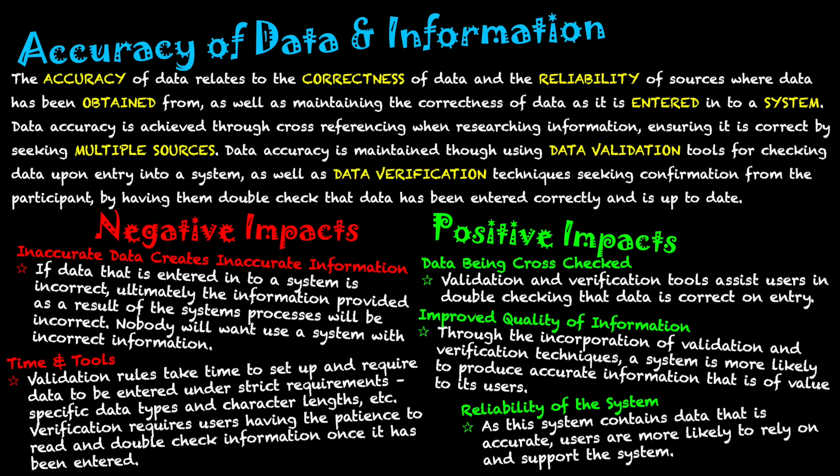Finally, there is the reliability of the system. As the system contains accurate data, users are more likely to rely on and support it, leading to a more successful information system. Accuracy is one of the foundation issues because data has to be correct in an information system — incorrect information leads to a poor system that no one will want to use. Accuracy is a great social and ethical issue to use in exams because it applies to virtually every information system.